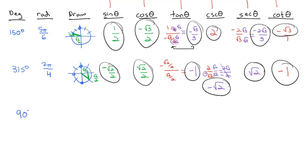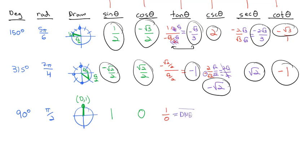Let's do one more — let's do 90 degrees, which we know is π over 2. Drawing that picture, 90 degrees is straight up, so the coordinates are (0, 1). The sine is the y-coordinate: 1. The cosine is the x-coordinate: 0. The tangent is y divided by x, which is 1 divided by 0, and 1 divided by 0 is undefined. The tangent of 90 degrees, or π over 2, does not exist.